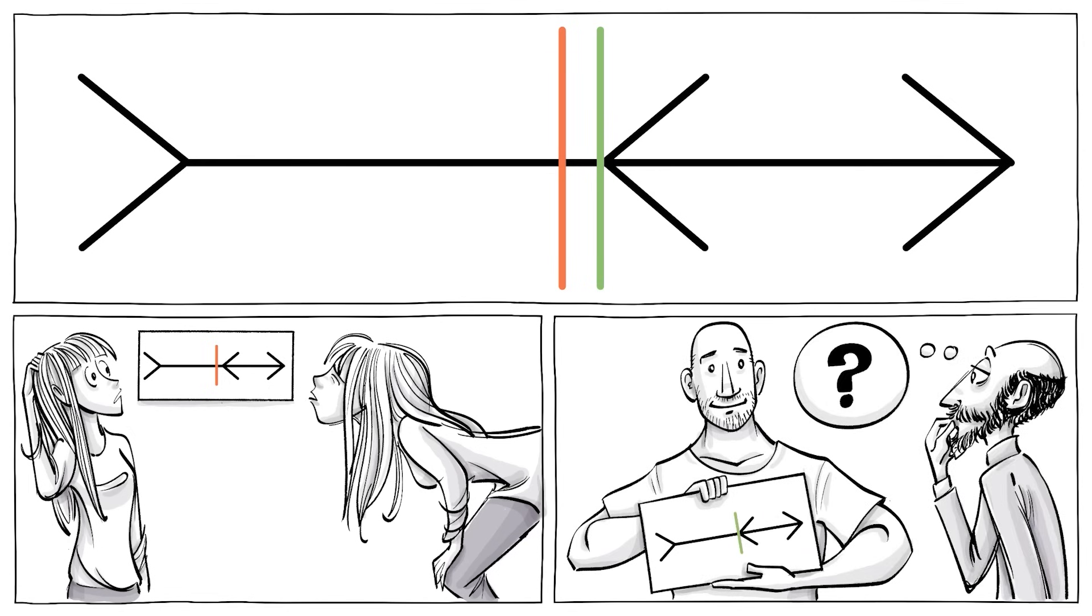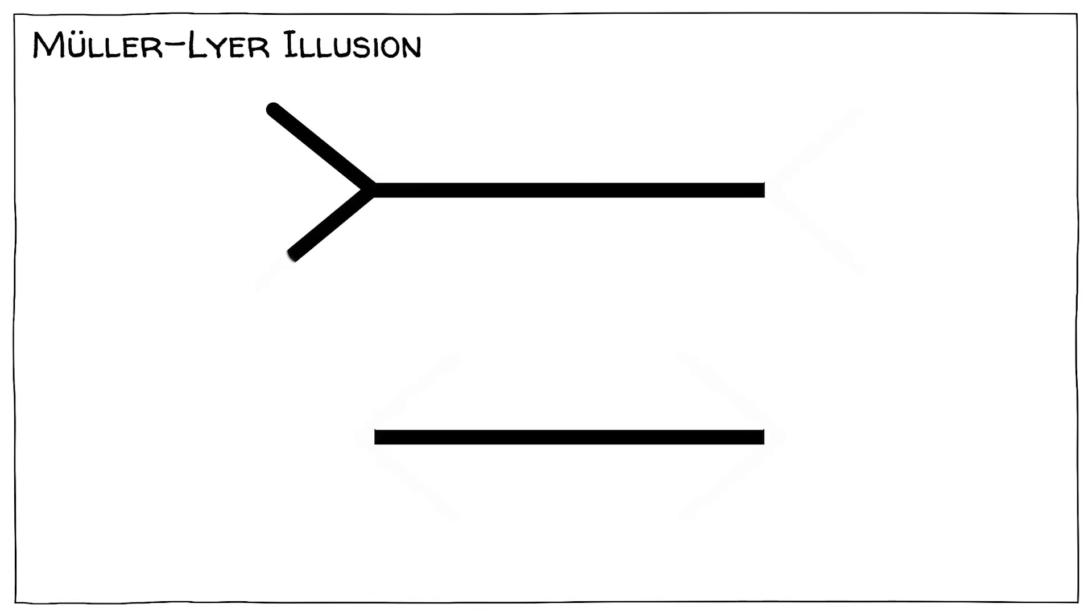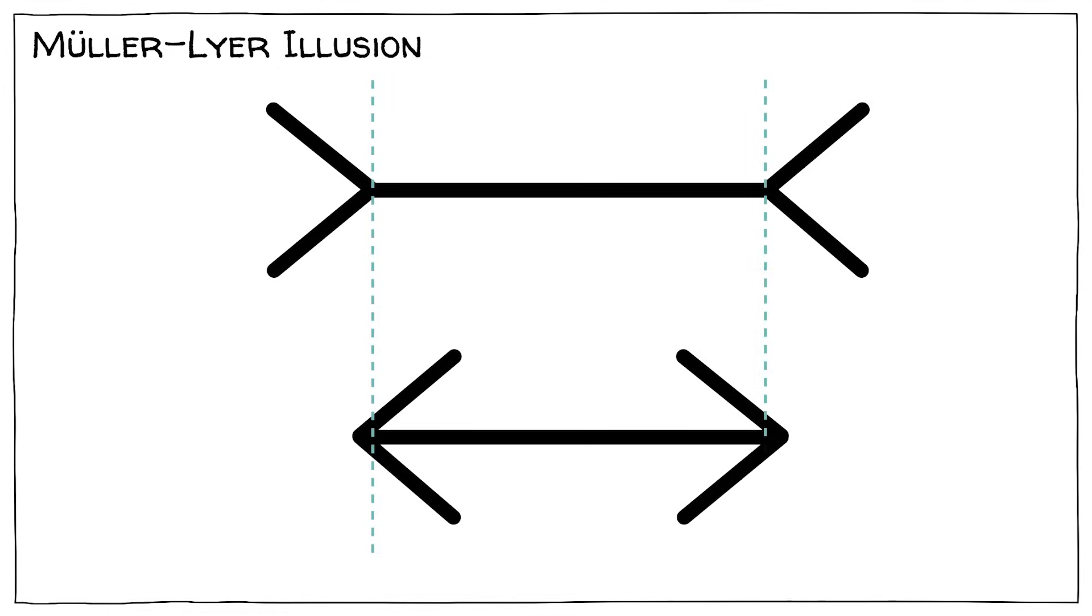But first things first. The Müller-Lyer illusion in its most famous form features two lines, each flanked by a set of opposing arrows which tricks you into thinking that one line looks shorter because the other appears further away, when in fact they are exactly the same.